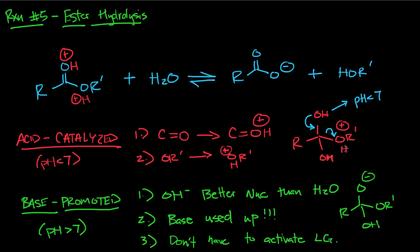We'll see in the base-promoted hydrolysis how you can actually have this leaving group leave without having to activate it. The other method is base-promoted, which happens when your pH is greater than seven. Notice that it's promoted and not catalyzed. The reason is because we don't regenerate the base—it gets used up.